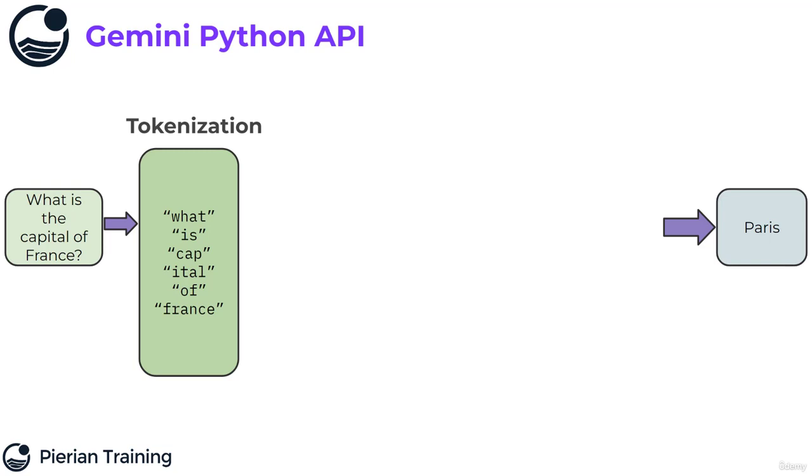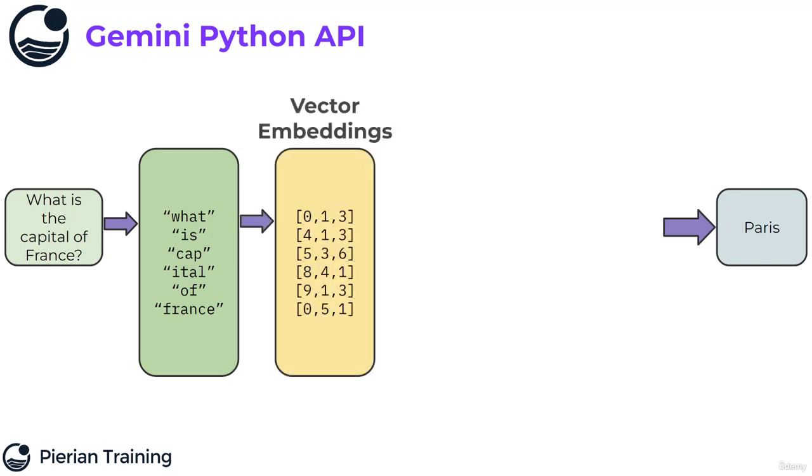So once we have the tokens, the trained model is going to convert those into what are known as vector embeddings. Clearly, there's a lot of math going on inside of the Gemini large language model, and you can't multiply or divide words. You can't say something like, what's France divided by Paris? So in that case, we're going to need to have a mathematical representation of the tokens. So we're going from words to tokens and then tokens to mathematical vector embeddings.